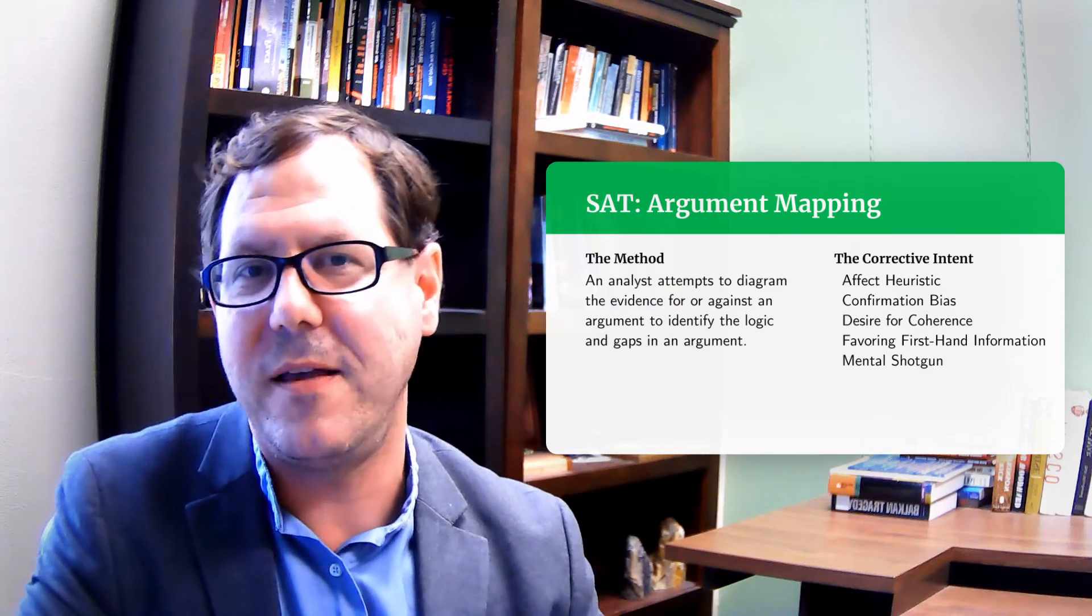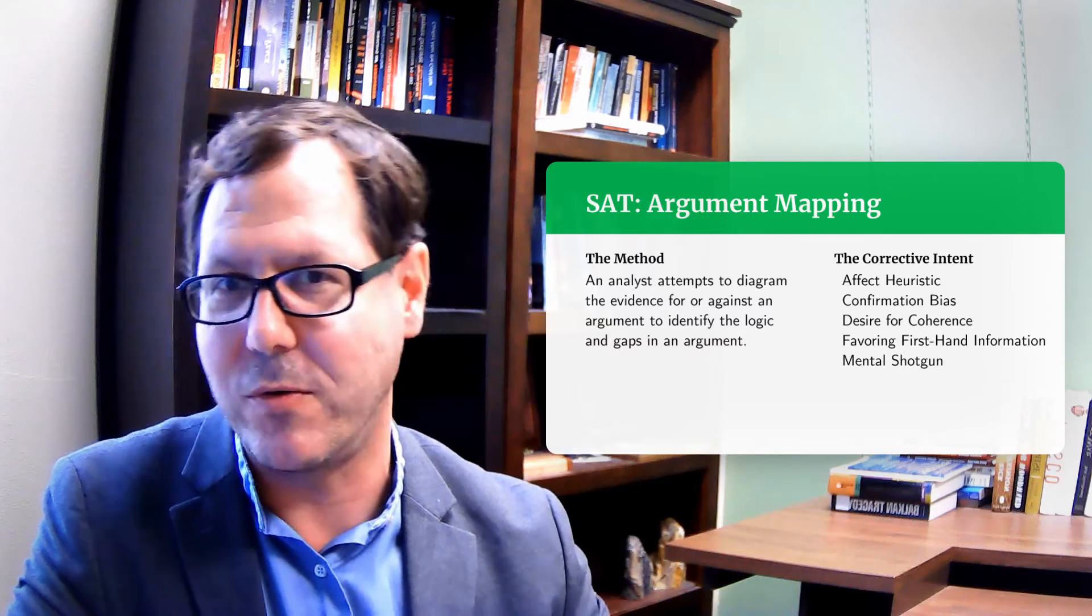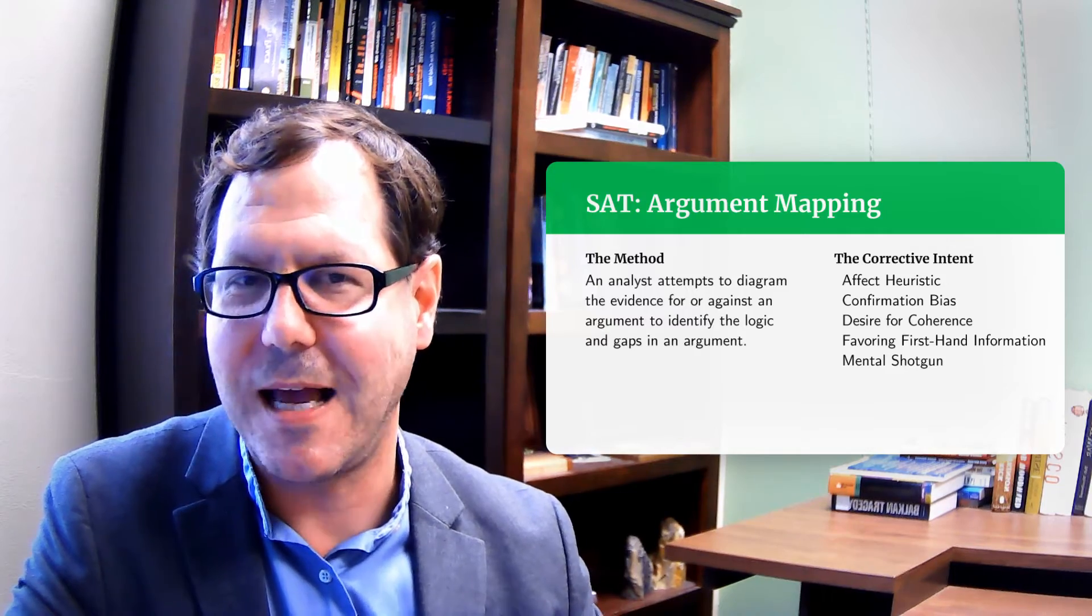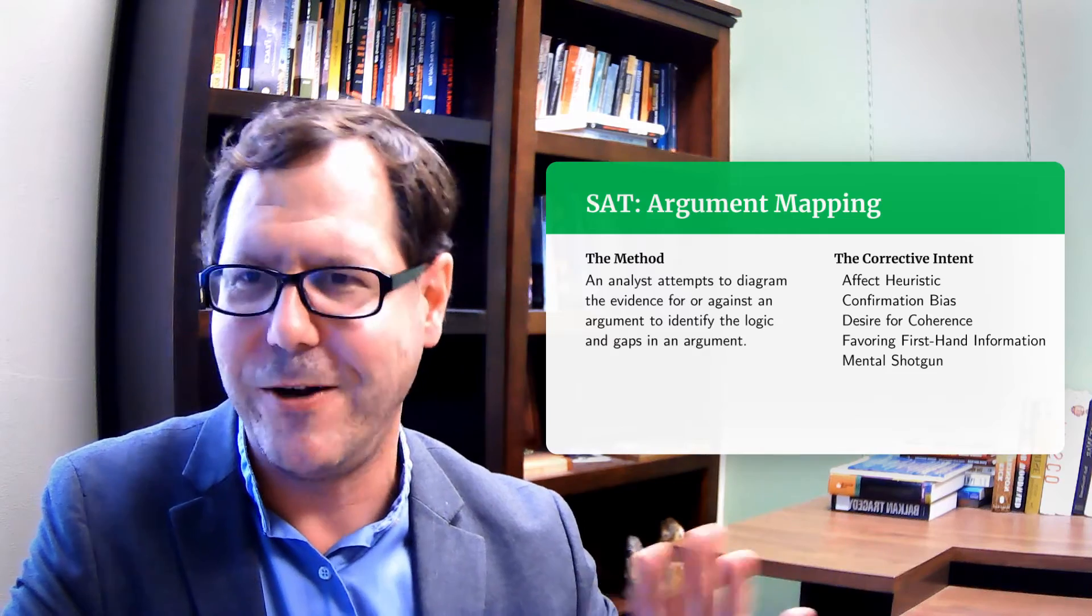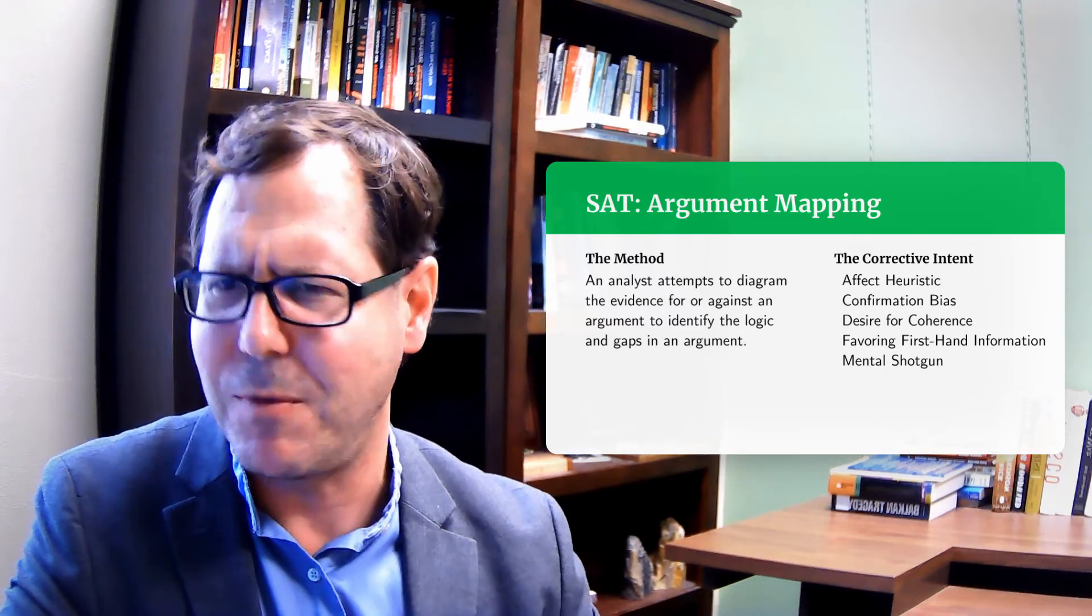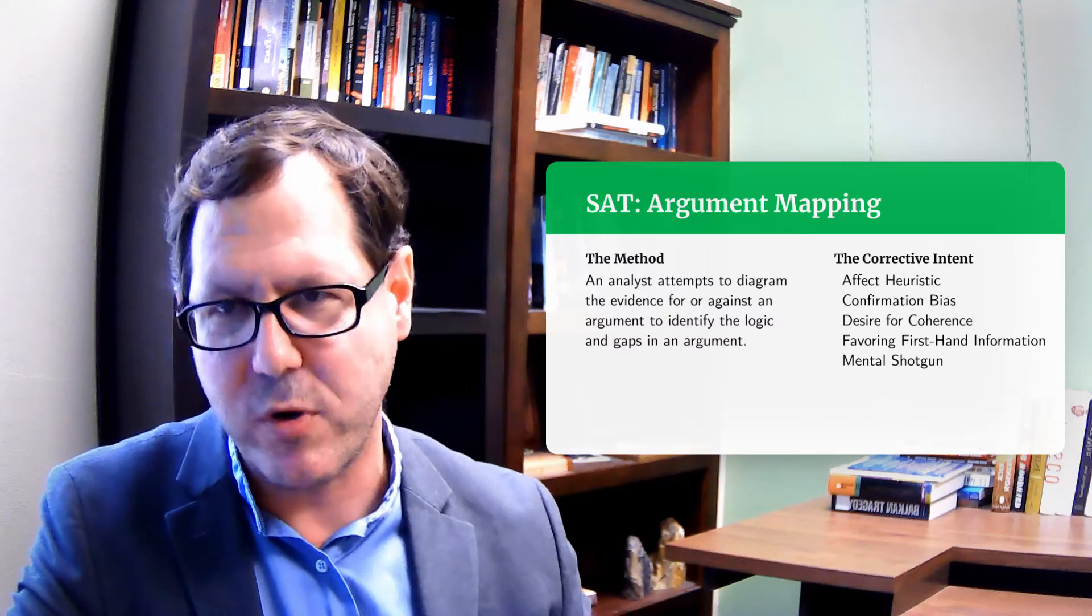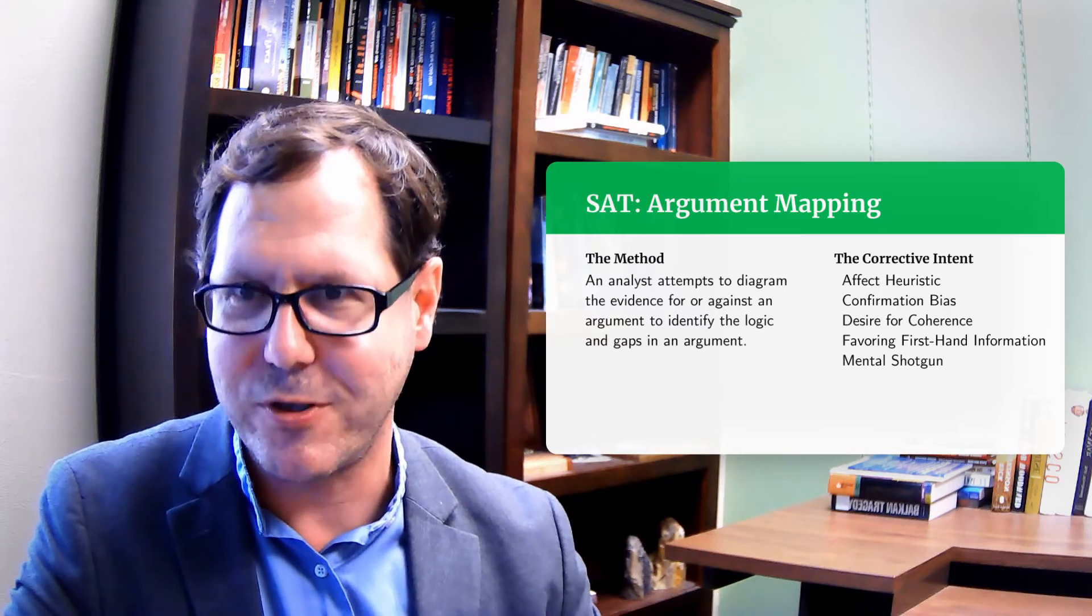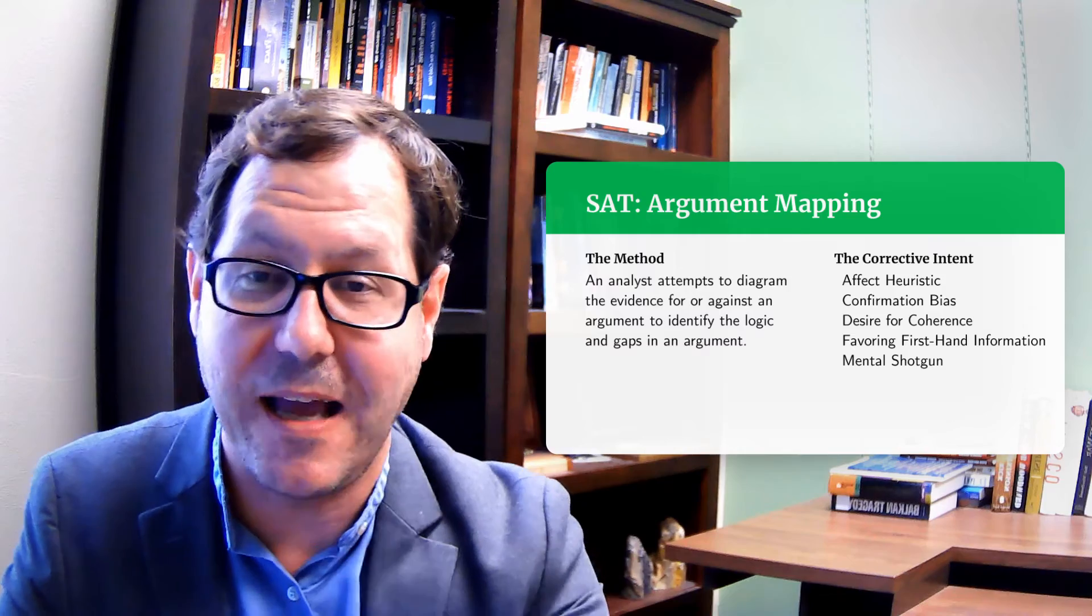A third method is argument mapping where you diagram out the evidence and how it supports or doesn't support your conclusion. There are a variety of techniques for this. I've been working on a video on Wigmore diagrams, providing a way of aggregating information together. That can be helpful in forcing you to work through the complexity of an argument. You're less likely to do mental shotgunning if you're forced to write down all the pros and cons and assess how they fit together.